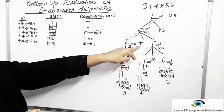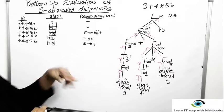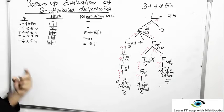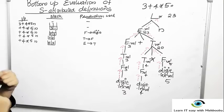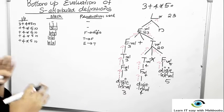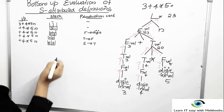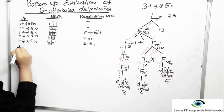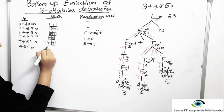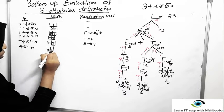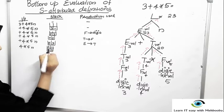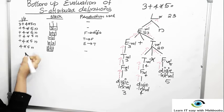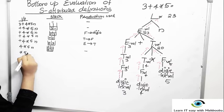Now we have E. There is a production E gives E plus T, so we can consider the plus in the remaining input. When attempting to reduce, we look at the rest of the input. We shift plus onto the stack, leaving 4*5n in the input. E has value 3, plus has no attribute value, and no production is used.